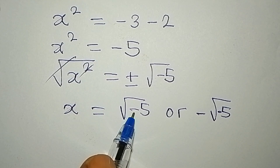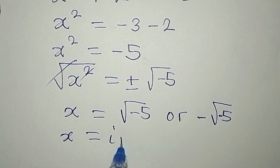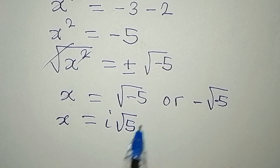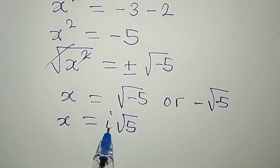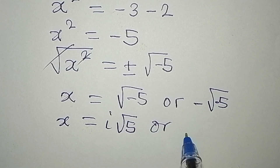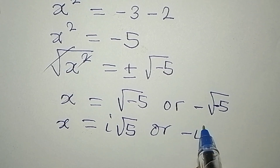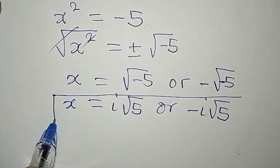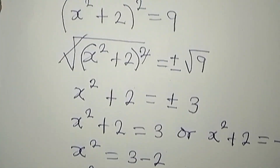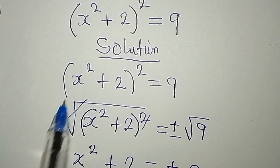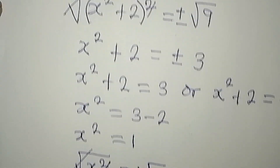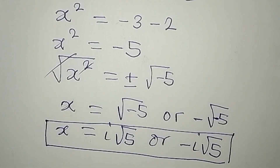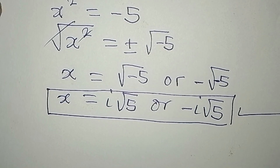Because of the negative under the square root, we write this as the square root of negative 1 times the square root of 5. The square root of negative 1 is i, which is imaginary, so we get x equals i√5 or x equals negative i√5 — two additional complex solutions. Therefore, the given equation (x squared plus 2) to the power of 2 equals 9 has four solutions total: two real solutions and two complex solutions. Thank you for watching.